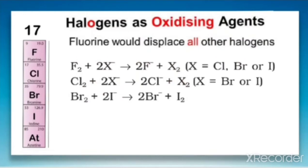But chlorine can displace only bromide and iodide ions. And bromine can displace only iodide ion. These three equations show that the halogen with the lower atomic number displaces the halide of greater atomic number.